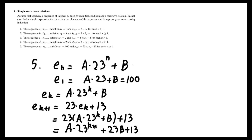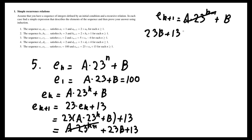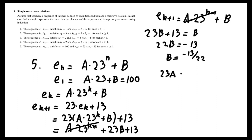If we assume the formula is true, then eₖ₊₁ must also be a times 23 to the k plus 1 plus b. For these two expressions to be equal, the a times 23 to the k plus 1 terms cancel, and we must have 23b plus 13 equals b, which gives 22b equals negative 13, so b equals negative 13 over 22. Plugging that back into e1: 23a plus b, which is negative 13 over 22, equals 100. Therefore a equals (100 plus 13 over 22) divided by 23.